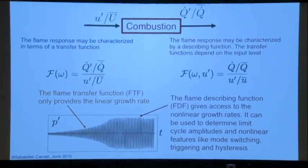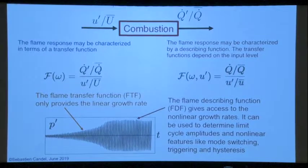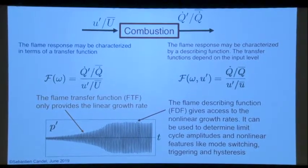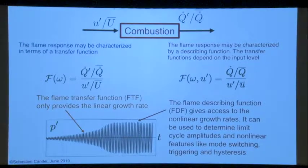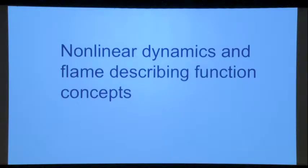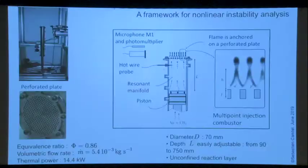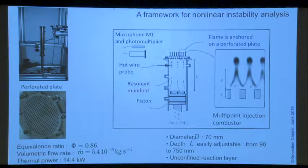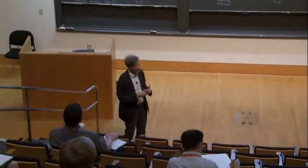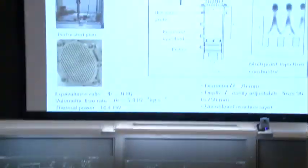You see, the transfer function is linear, while the describing function allows you to do non-linear — for example, to determine this limit cycle. So what is the experiment? At that time, we were interested in the oscillations that take place when you have a matrix burner — you have this sort of matrix of little flames sitting here. And what we did was to have something which would look like a trombone. The trombone has a variable manifold — this is what we have here. We have a piston.